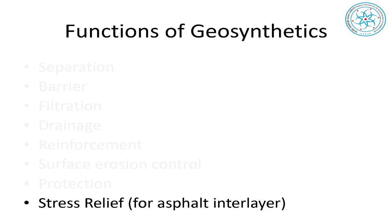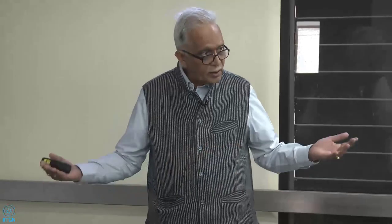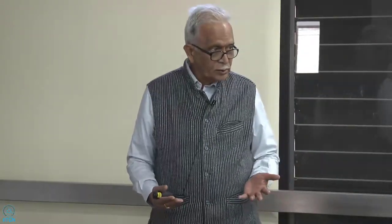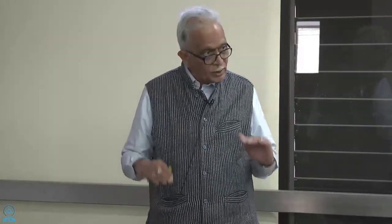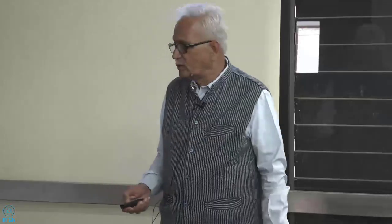Stress relief: many roads — both bituminous asphaltic pavement and concrete roads — are subject to damage due to heavy traffic and poor construction. When superposing a new overlay layer, there are tensile stresses in the system. A geosynthetic layer takes care of those tensile stresses. In India this is called a stress absorbing membrane interlayer (SAMI), and the mineral layer is replaced with a geosynthetic. This was done in Jaipur — we will discuss it when we cover pavements.